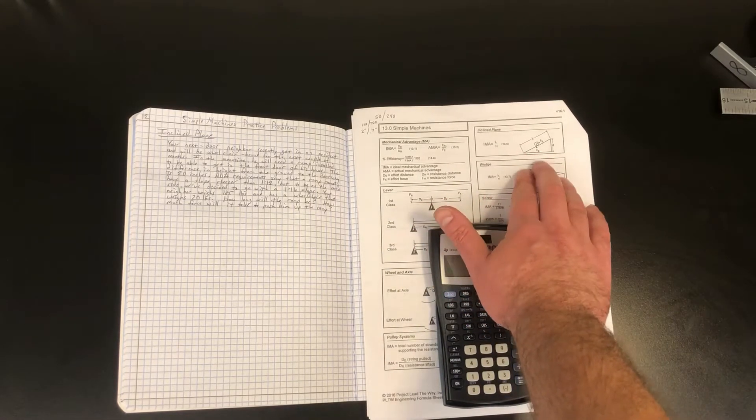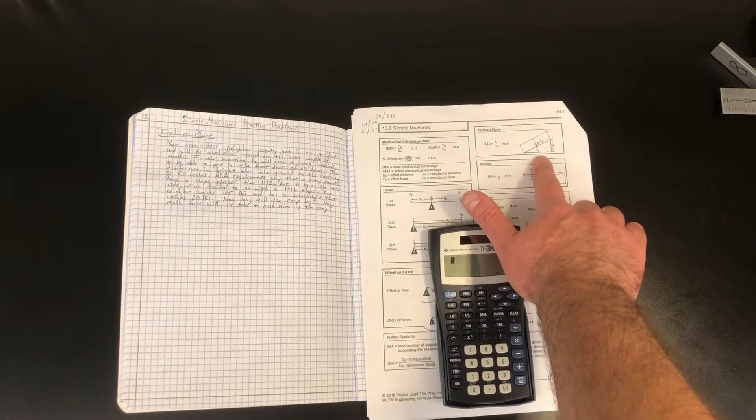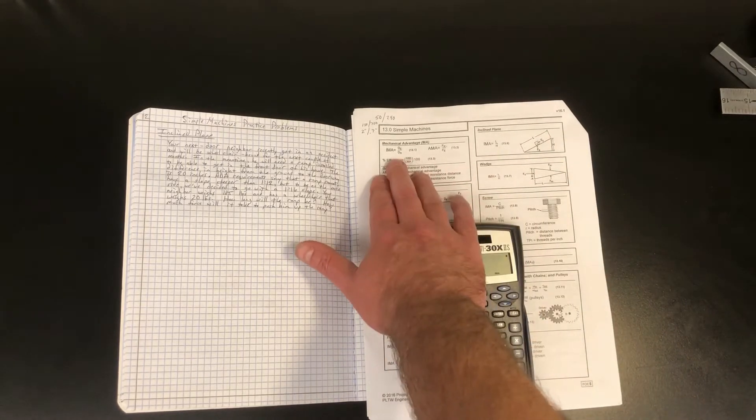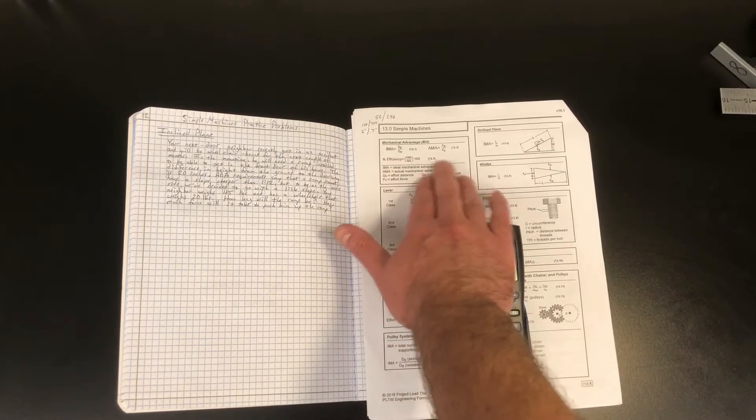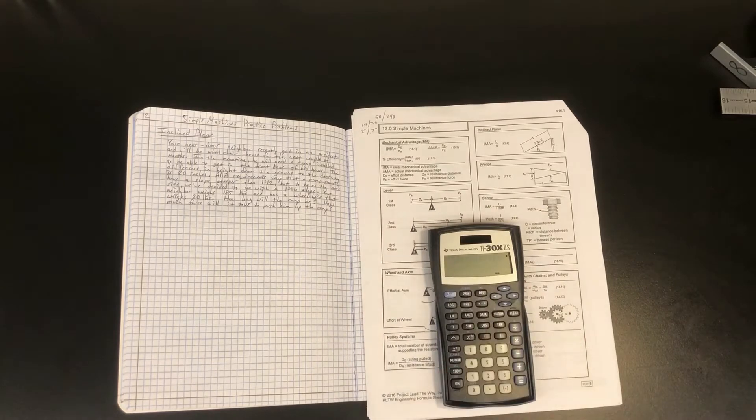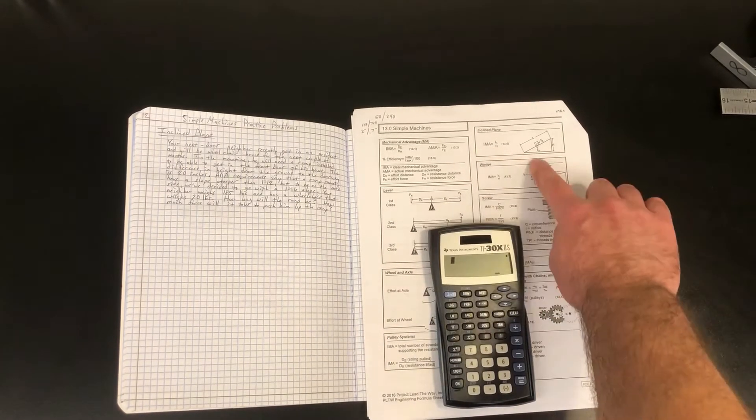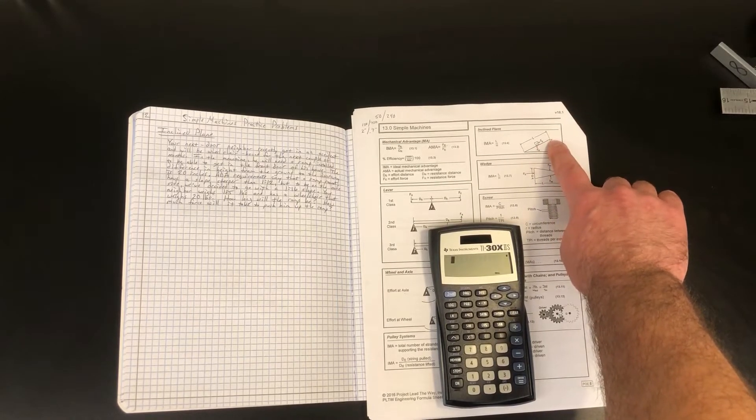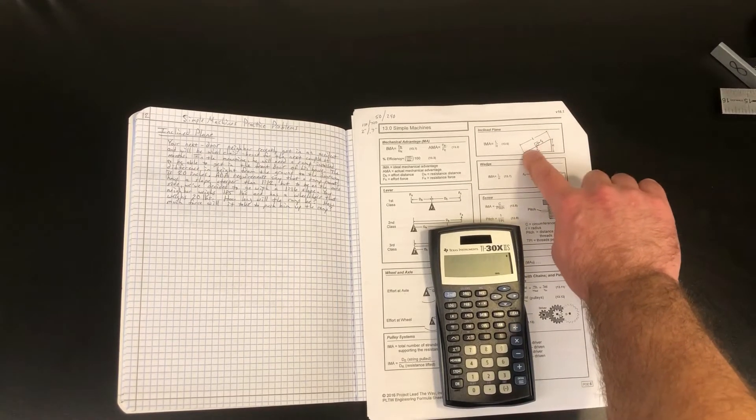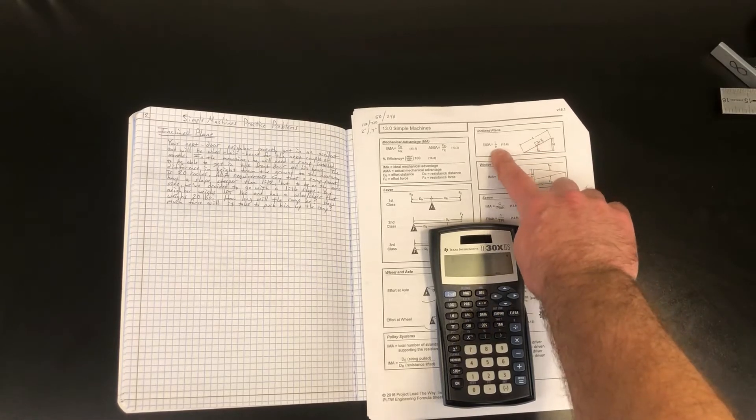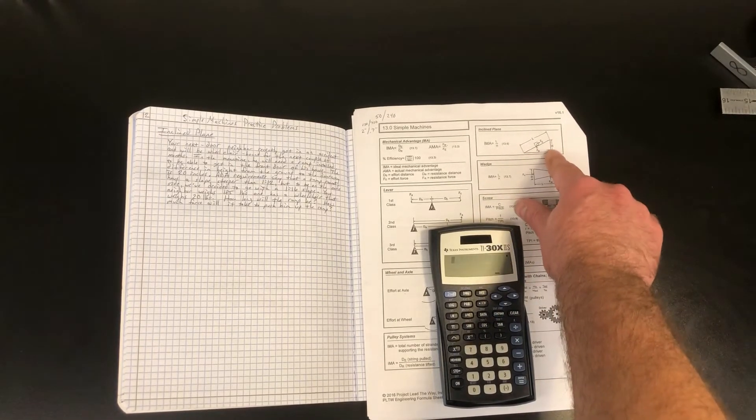Here we have our incline plane and this is our diagram, and here is our IMA and AMA calculations. So IMA of an incline plane is L over H, so L is the length of the slope. We're going to have to actually find the length of the slope, and then H is the height of the incline plane.